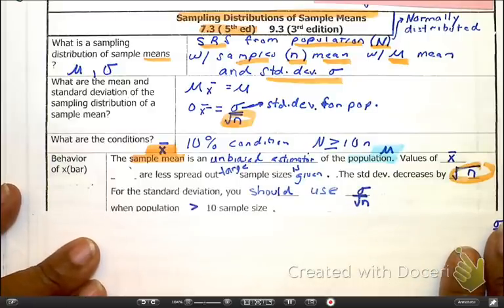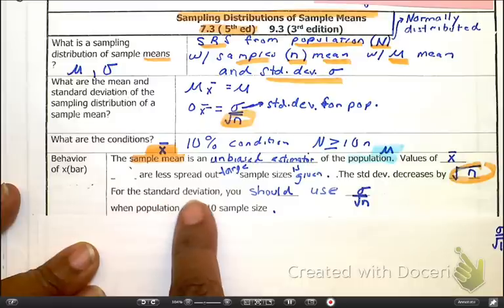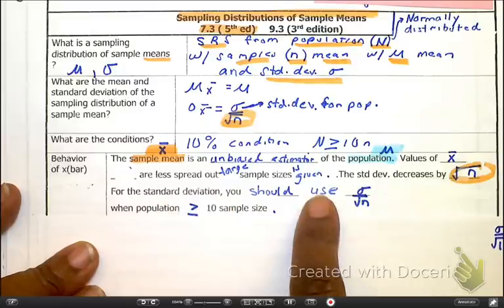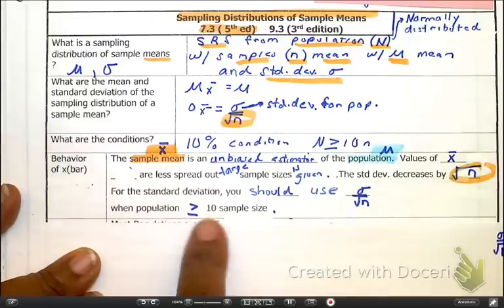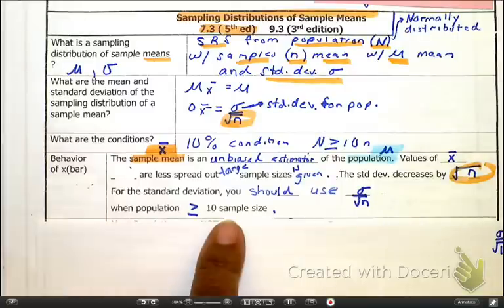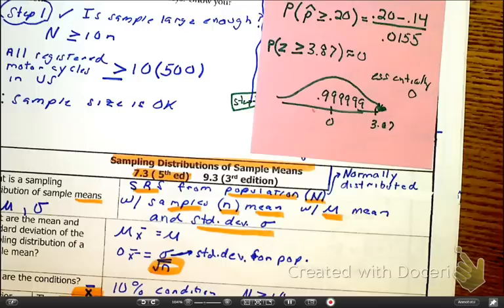But now things are different. We now have to use the standard deviation of σ divided by the square root of n, and of course the bottom line is when the 10% rule is applicable when we have a large enough sample size. Now let's just jump into a problem.